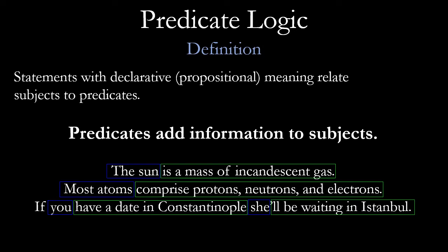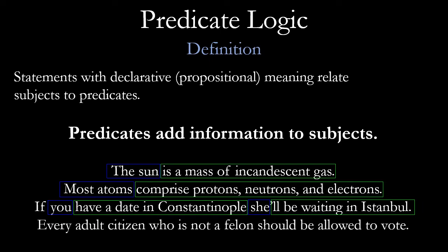The predicates are 'have a date in Constantinople' and 'she'll be waiting in Istanbul.' That might not necessarily square with the way we define things grammatically. However, for predicate logic, the focus is on the if-then relationship, which is going to be important later on because by translating, we want to put sentences into a format where we can properly use natural deduction or analyze them for their logical consistency. This video is only about translations.